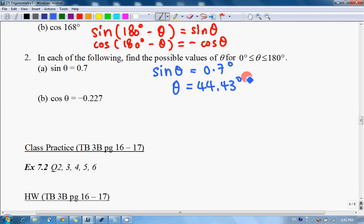However, remember that sine(180° - θ) and sin θ will give the same value. So my θ can actually also be equal to 180 minus 44.43 degrees, which is 135.57 degrees.